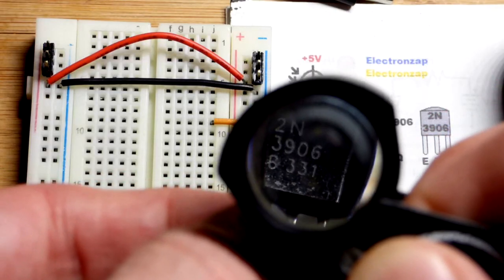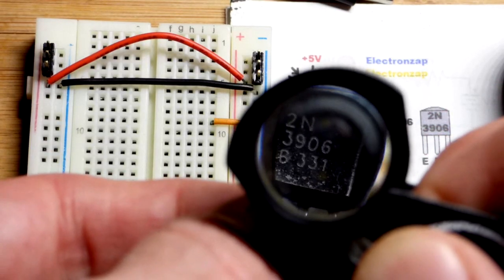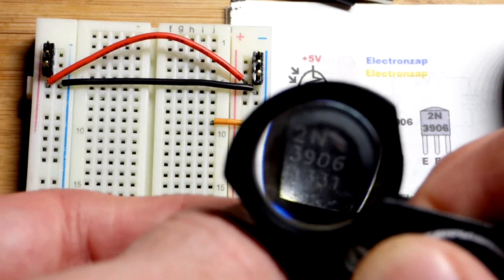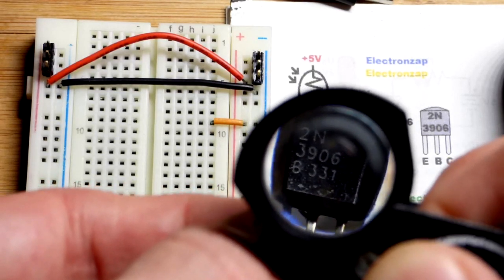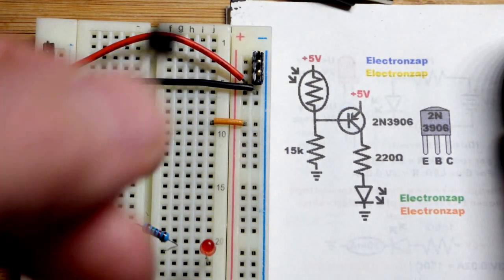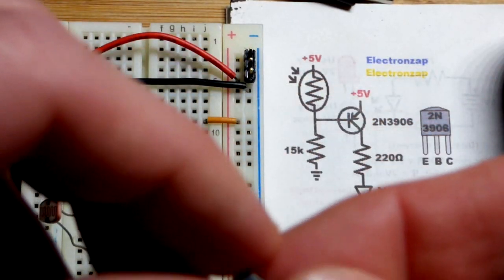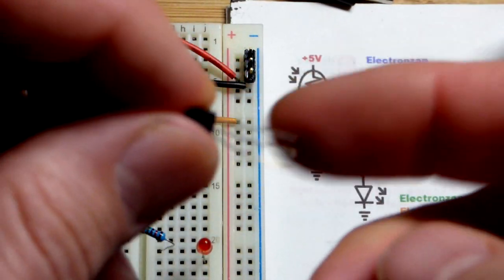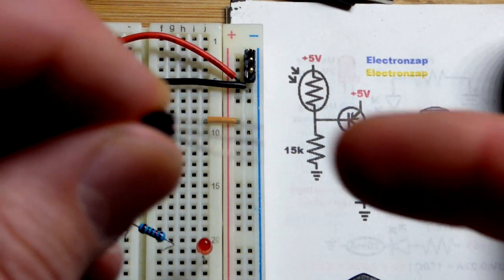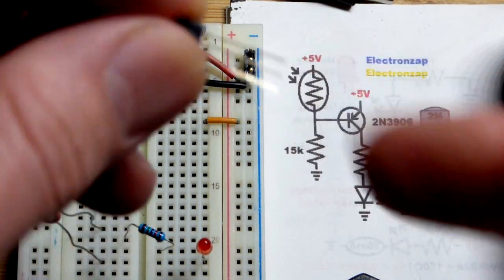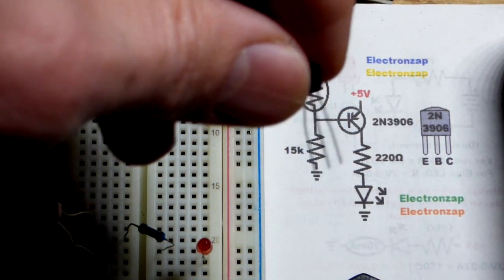So we got 2N3906 right there. It's a PNP bipolar junction transistor and you can check the data sheet for what the other numbers down there mean. You got to make sure you get the right manufacturer that made this particular one. And it's probably a knockoff from China. So who knows how accurate that may be.